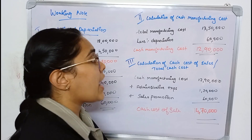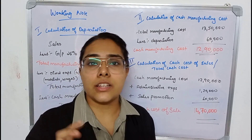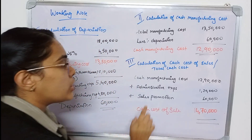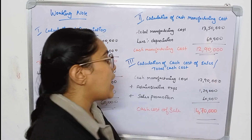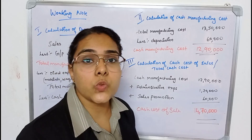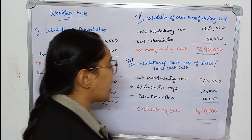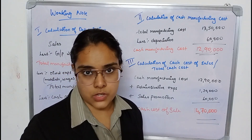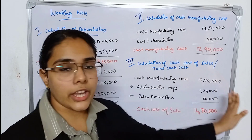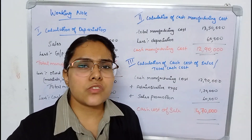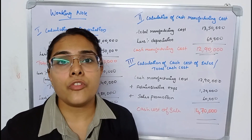The third working note is the calculation of total cash cost of sales, excluding depreciation. We take the cash manufacturing cost of 12 lakh 90 thousand, then add administrative expenses and sales promotion expense. Adding both these expenses to the cash manufacturing cost gives us a total cash cost of sales of 14 lakh 70 thousand. Note all these working notes carefully — the main difficulty is calculating depreciation and total cash cost of sales.